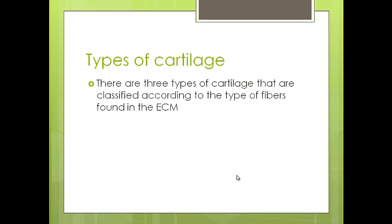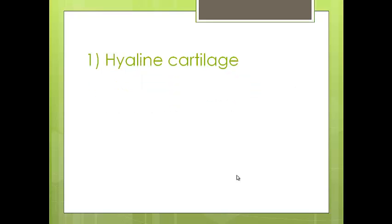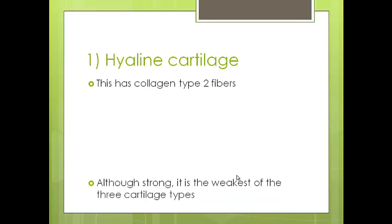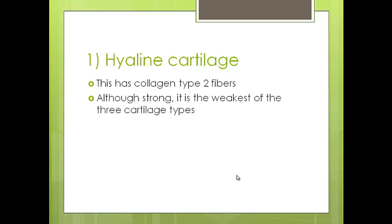Depending on the type of fibers found in the extracellular matrix, we have three types of cartilage. Remember, the overall components are the same — cells, extracellular matrix made of proteoglycans and water, precursor cells, and mature cells — but the component that changes is the fibers. So depending on the type of fibers, you get three different types of cartilage. The first is called hyaline cartilage. Hyaline cartilage has collagen type 2 fibers. Although collagen type 2 fibers are generally strong, hyaline cartilage is the weakest of the three types.